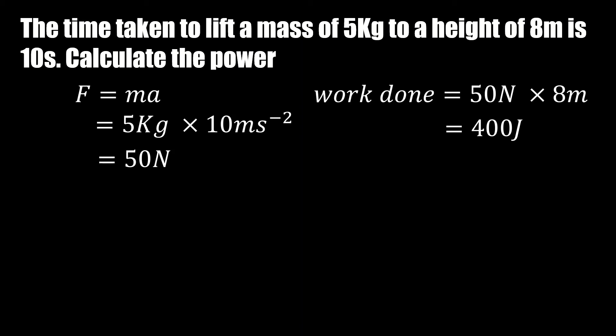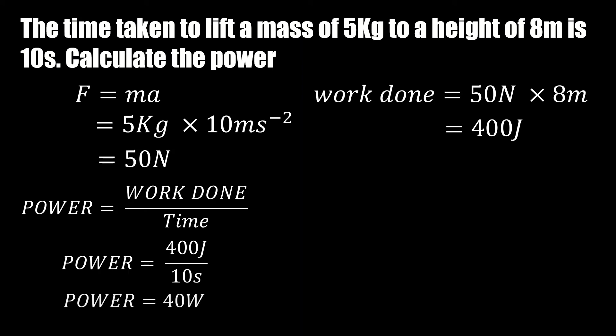Now let's calculate the power using the equation. Power is equal to work done over time, which is 400 joules divided by 10 seconds, which is 40 joules per second, which gives us 40 watts. So that's how you use this equation to calculate power.